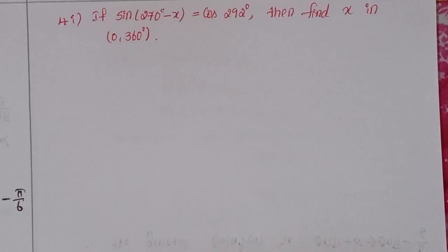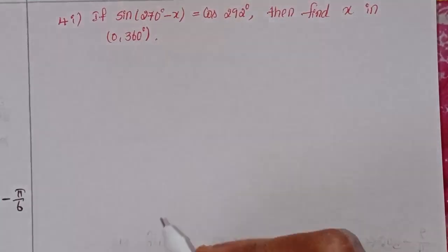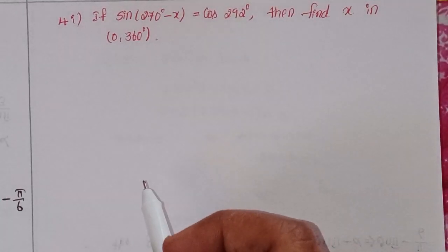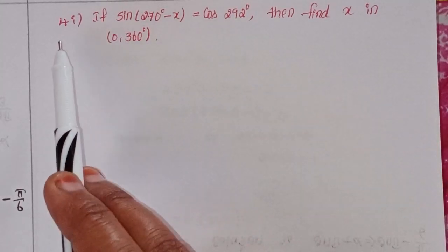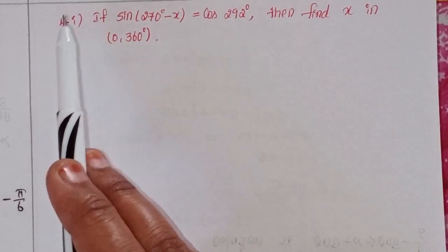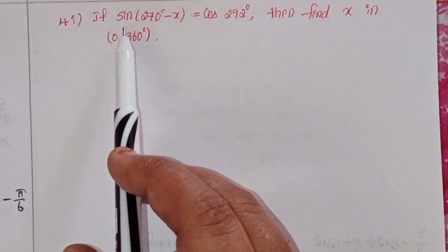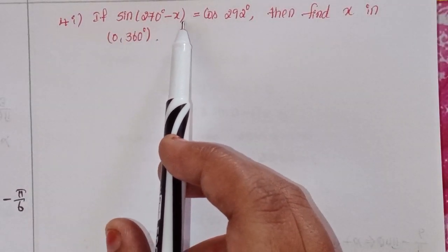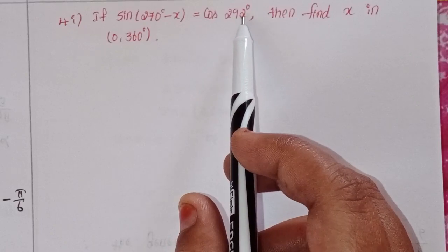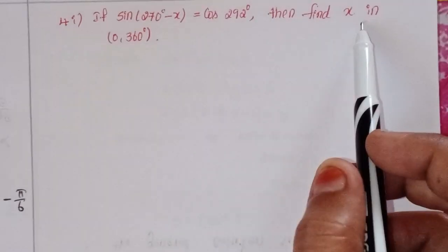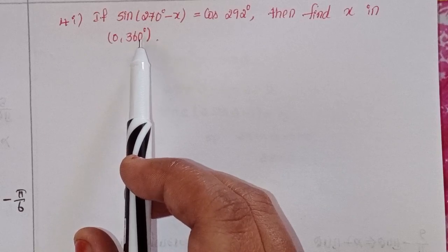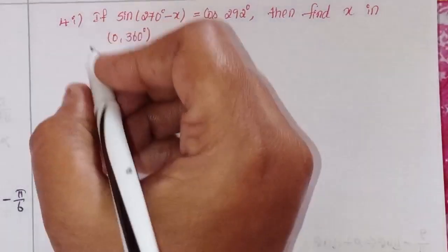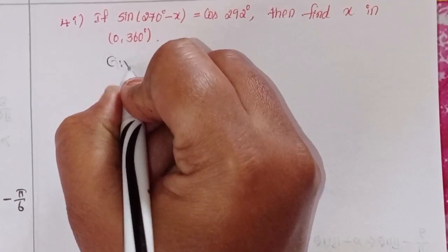Hi viewers, this is Shahin and welcome to my channel. Today we will discuss intermediate first year 1A, chapter number 7, trigonometric equations, exercise 7A, fourth problem. Given: if sin(270° - x) = cos(292°), then find x in the range 0 to 360 degrees.